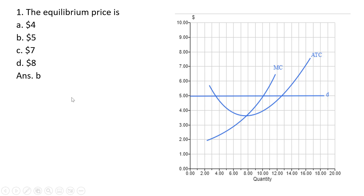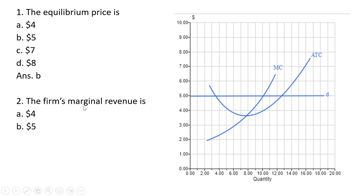The correct answer is B. The firm's marginal revenue: in perfect competition, marginal revenue is just price. So this demand curve that the perfectly competitive firm faces is also its marginal revenue curve. Answer choice B is correct.